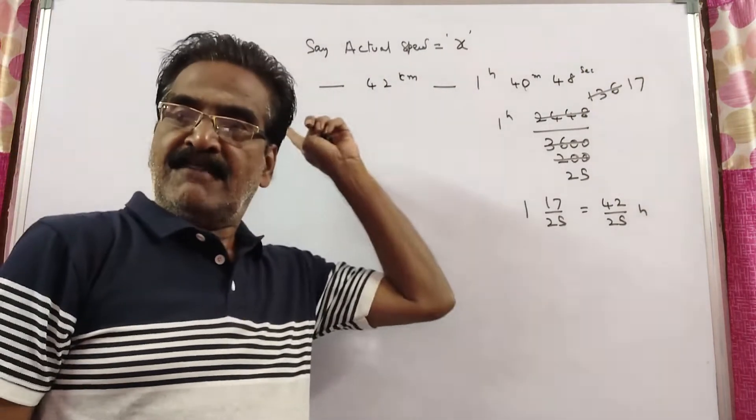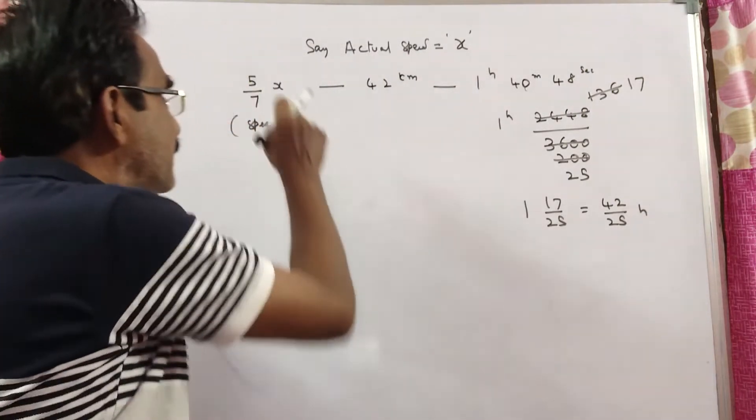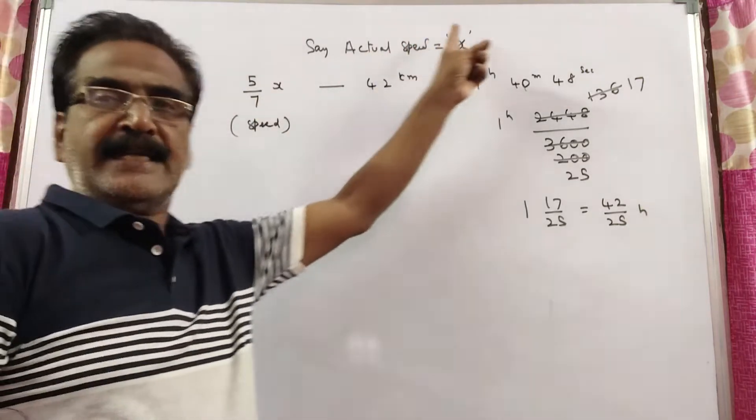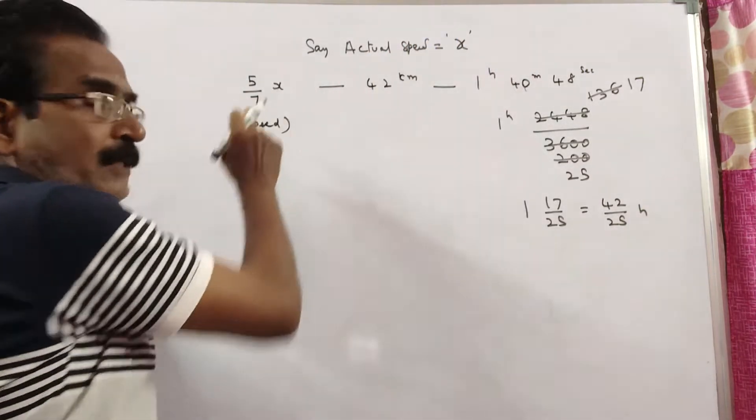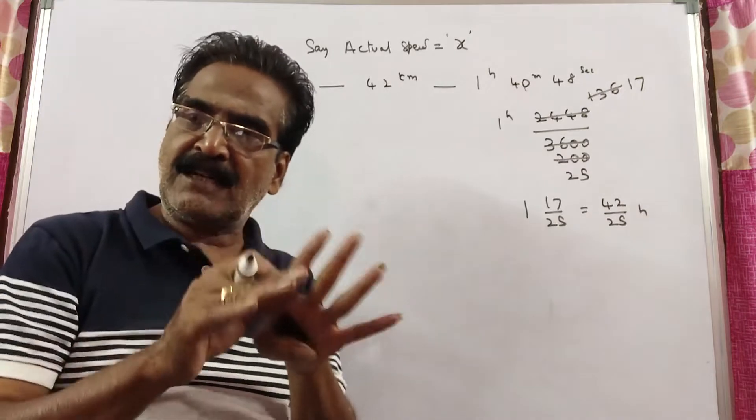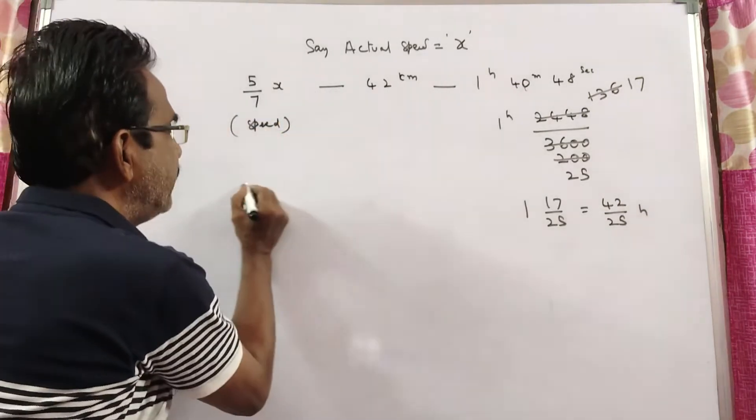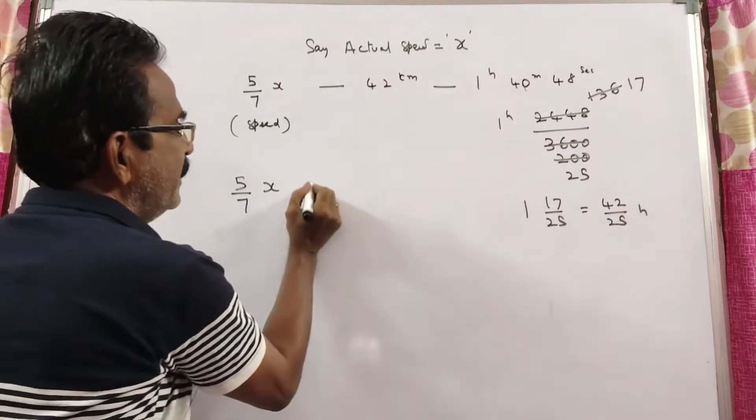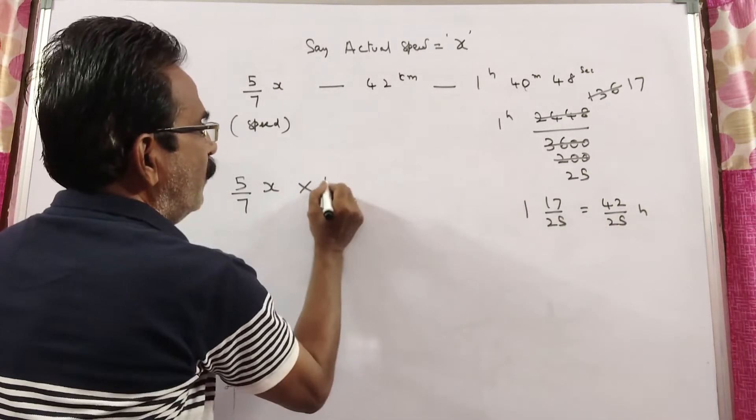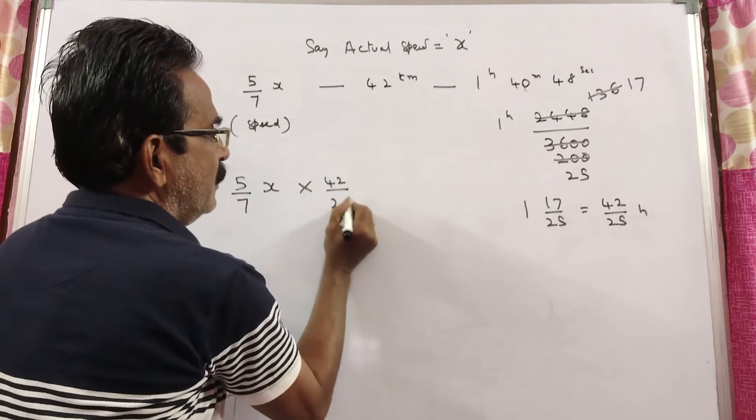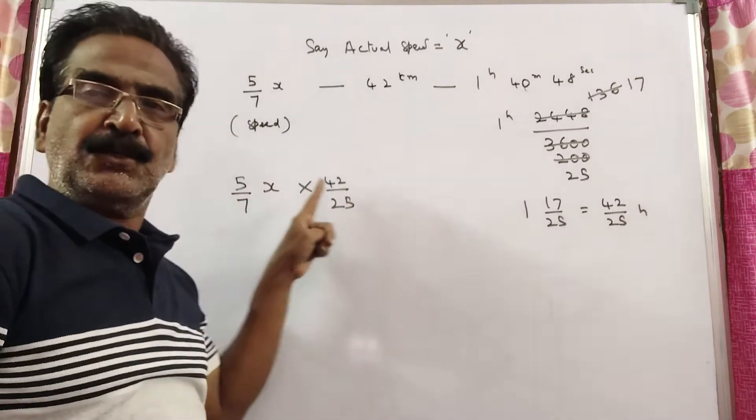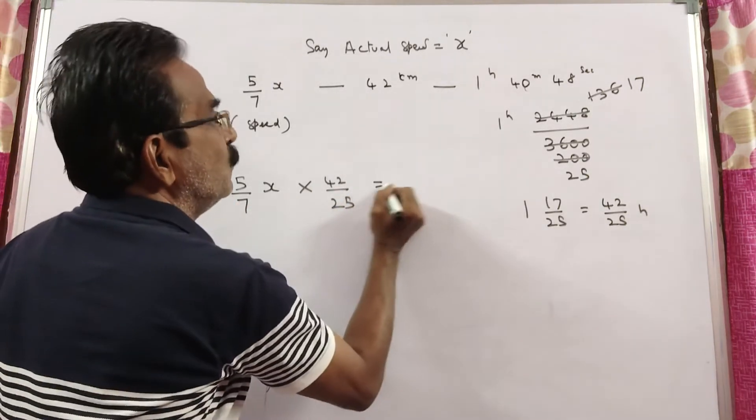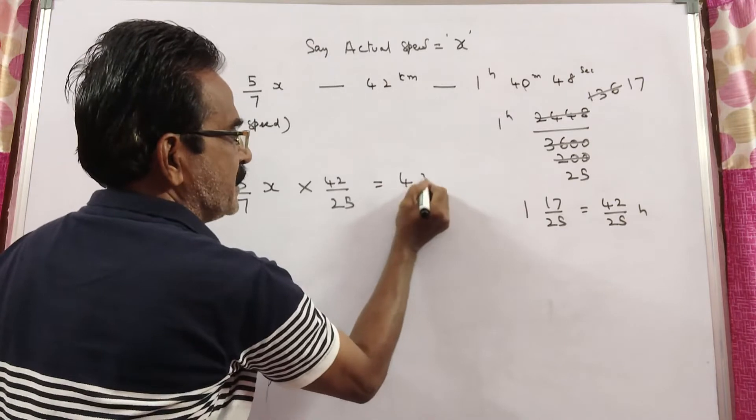Traveling at 5/7 of his actual speed. Say actual speed is x. The present speed is 5/7 of his actual speed. Speed times time equals distance: 5/7 x times 42/25 equals 42 kilometers.